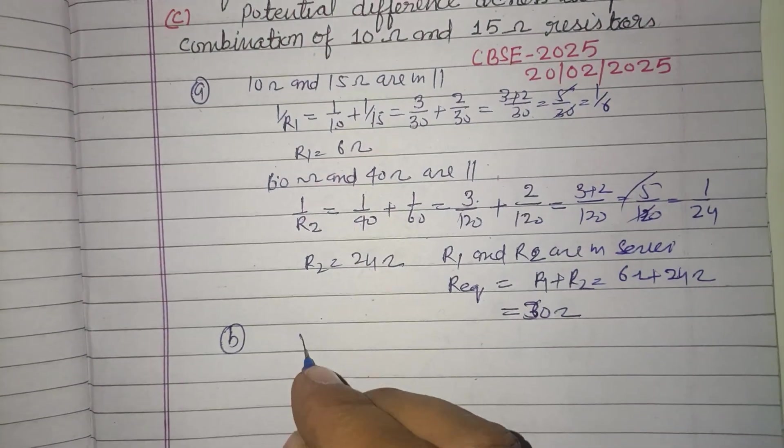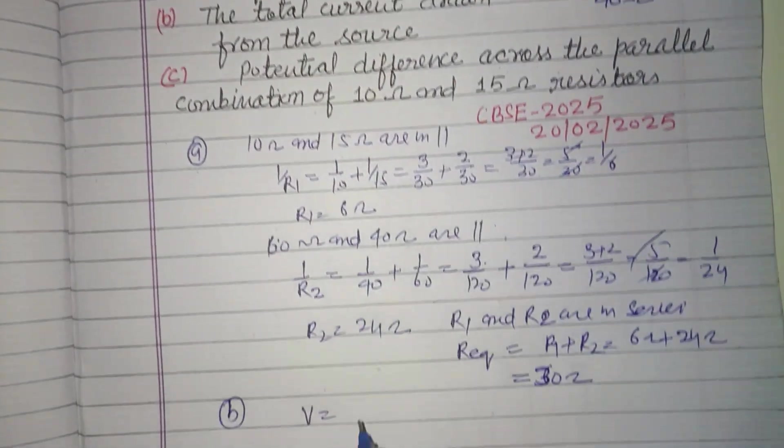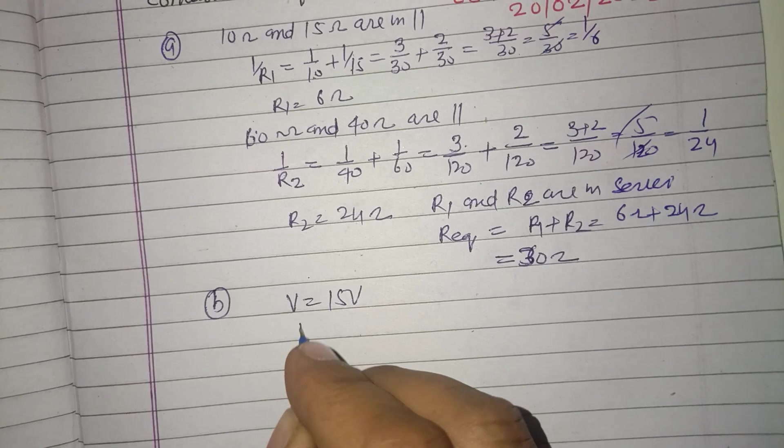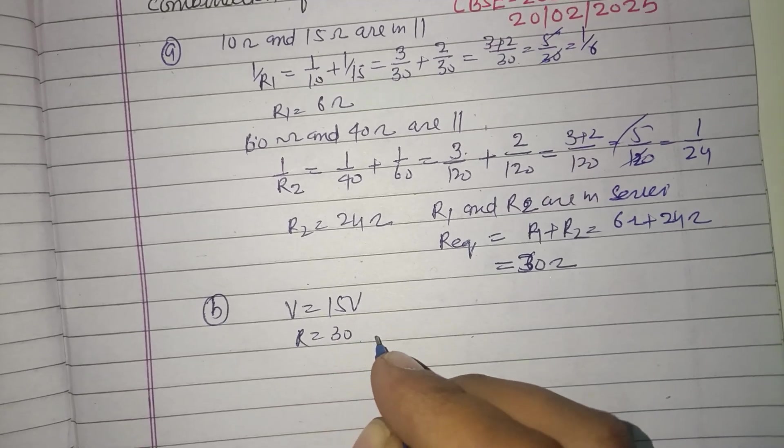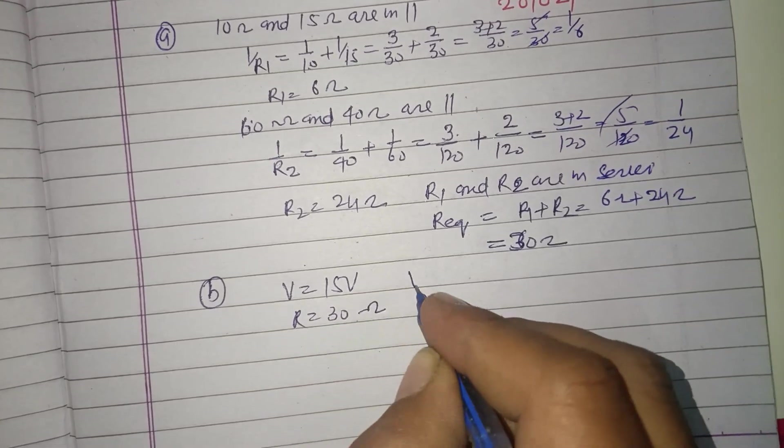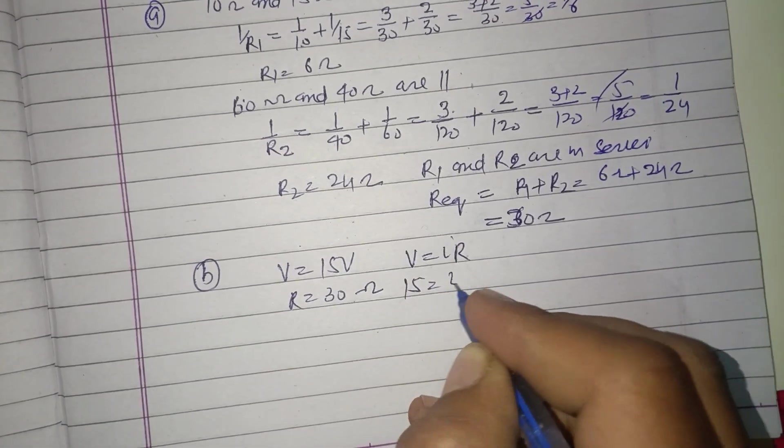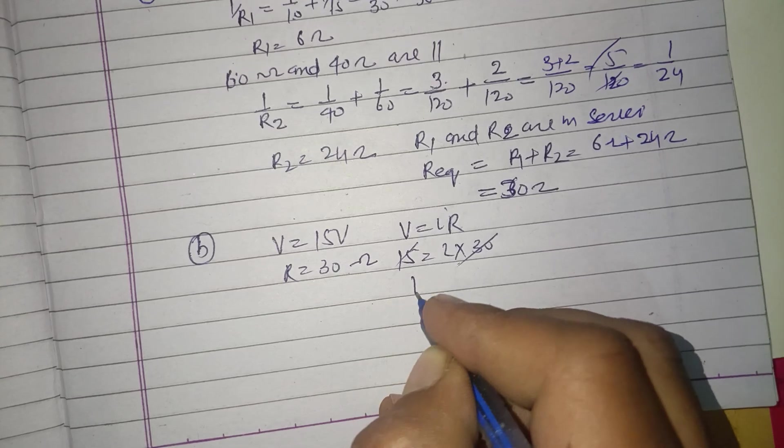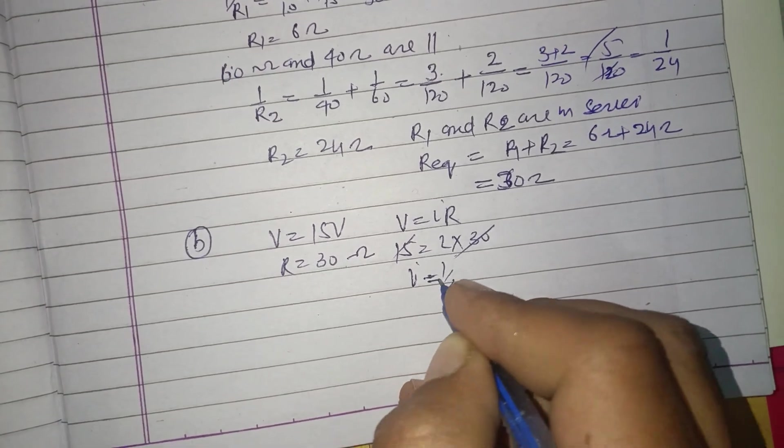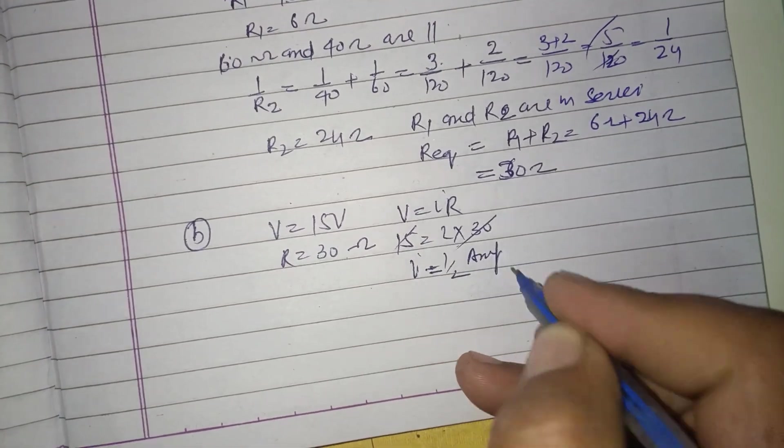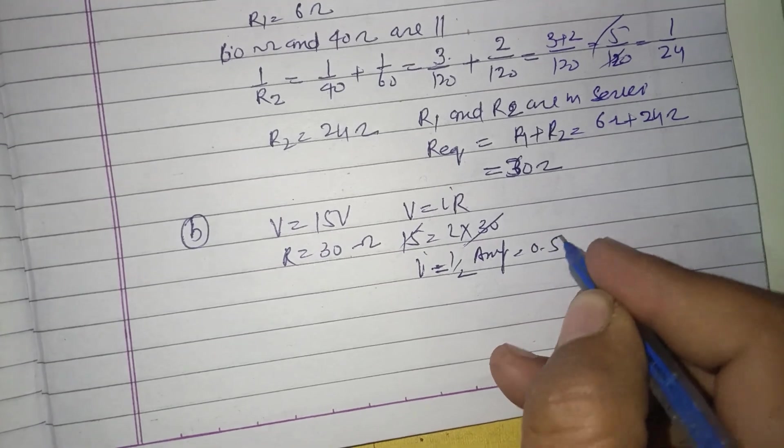Now part B, the total current drawn from the source. Here potential is 15 volt, R is 30 ohm. Using Ohm's law, V equals IR. V is 15, I into 30, so I equals 1 by 2 ampere, or that is 0.5 ampere.